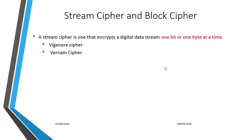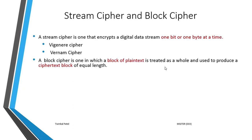Another type of cipher is known as block cipher. A block cipher is a cipher which encrypts a block of plaintext. A block of plaintext is processed as a whole and used to produce a ciphertext block of equivalent size. Examples of block ciphers are Feistel cipher, DES, AES, and Triple DES.